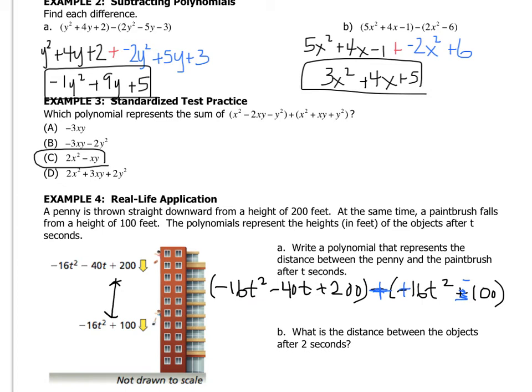So, I'm going to combine terms. Well, this negative 16t squared actually cancels out with this positive 16t squared. And so, I just have negative 40t because nobody combines with that. And then 200 and negative 100 cancel out or they don't cancel but you get plus 100. So, that would be the expression that represents the distance.